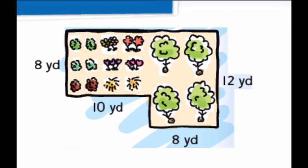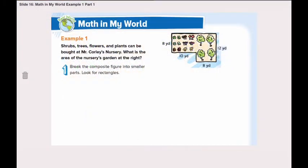Here we have the garden. Is it one rectangle? No, this is a composite figure. Why is it a composite figure? Because it's made up of two or more figures. Because it's a composite figure, we will start by breaking the figure into smaller parts.